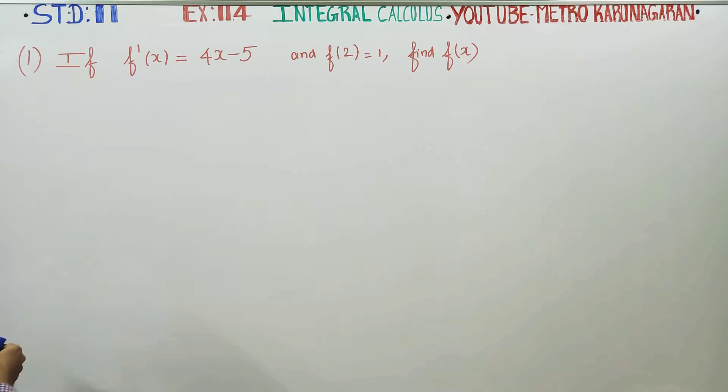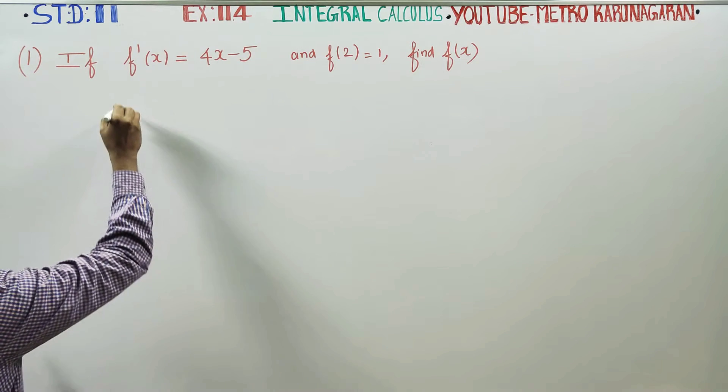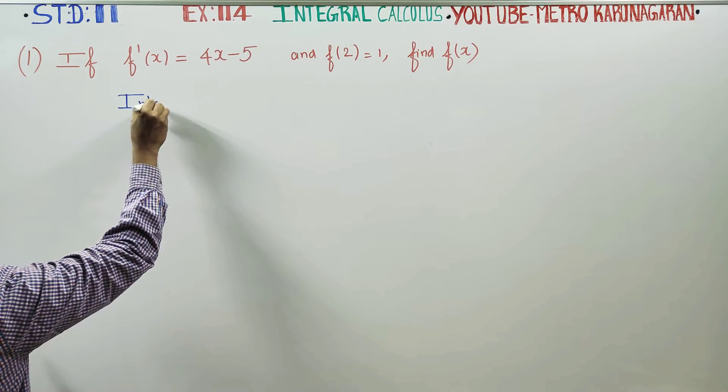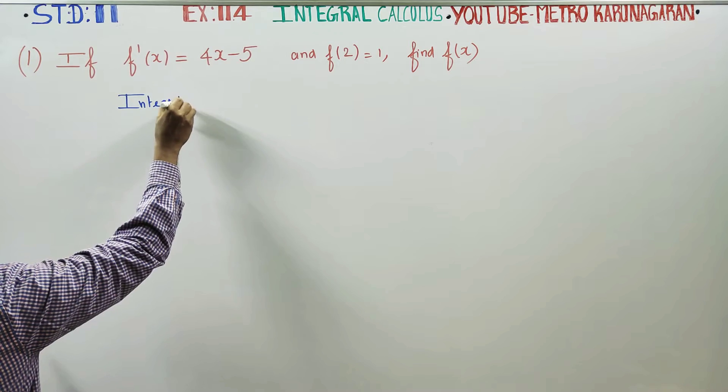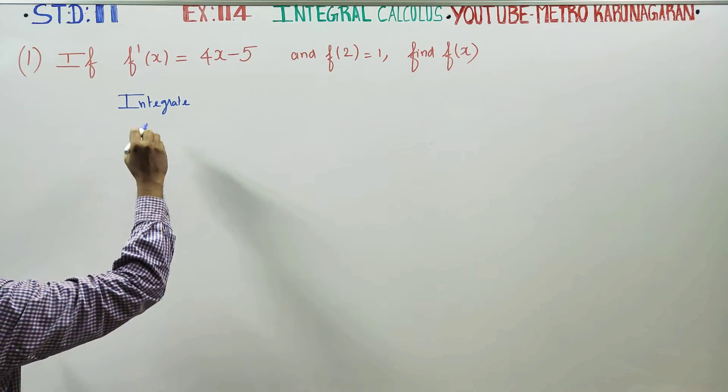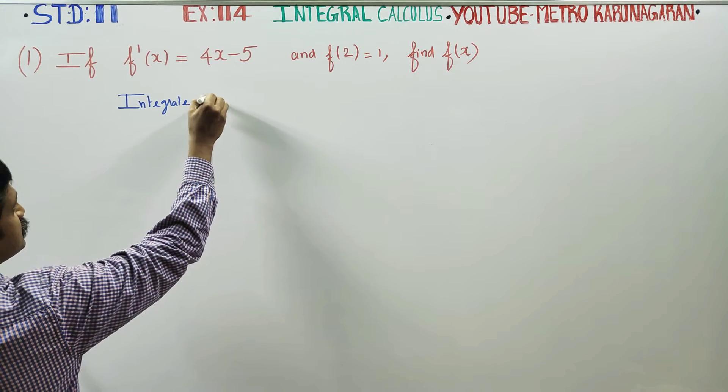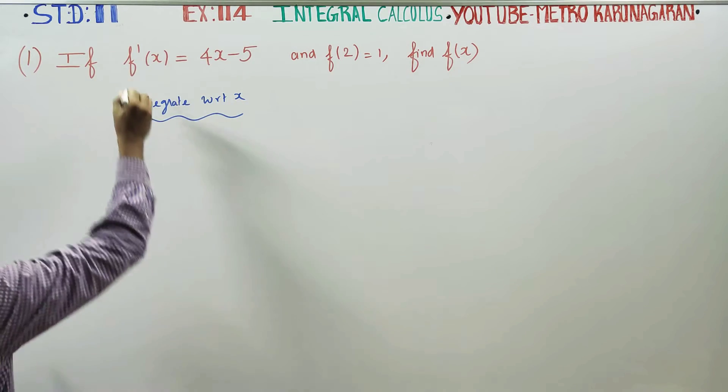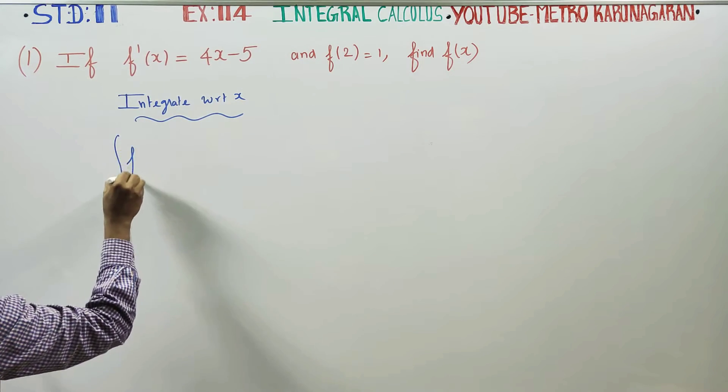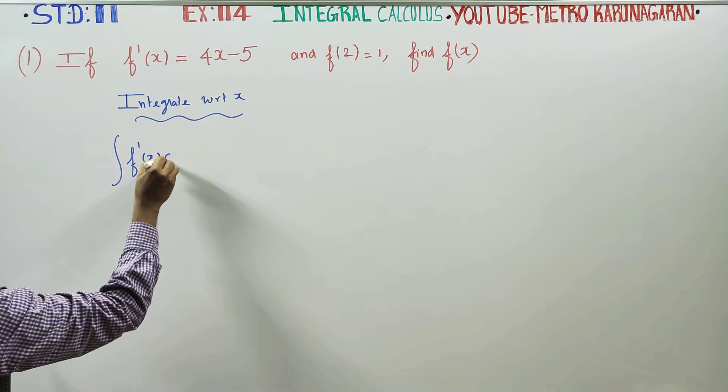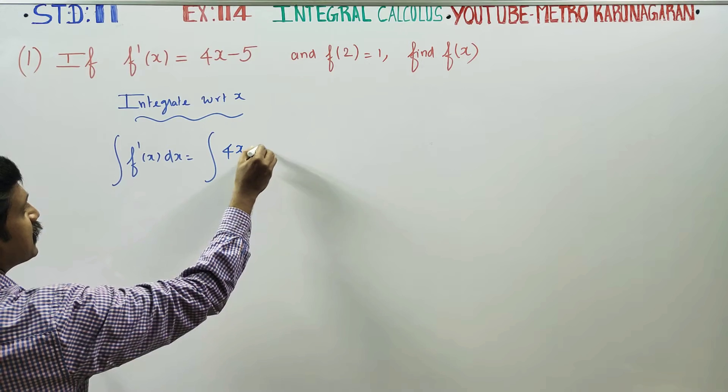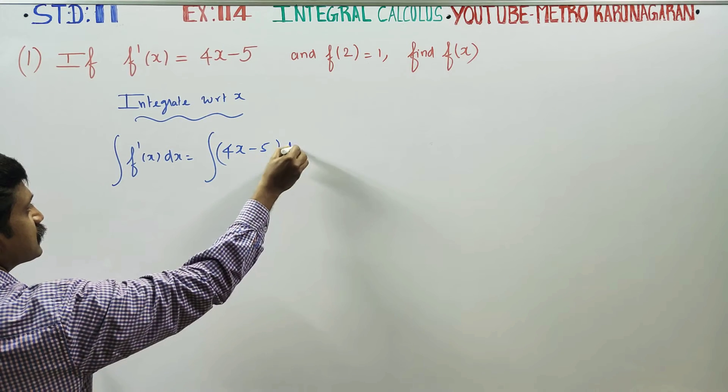f'(x) is equal to 4x minus 5. I am going to integrate this function on both sides with respect to x. Integration of f'(x) dx is equal to integration of (4x minus 5) dx.